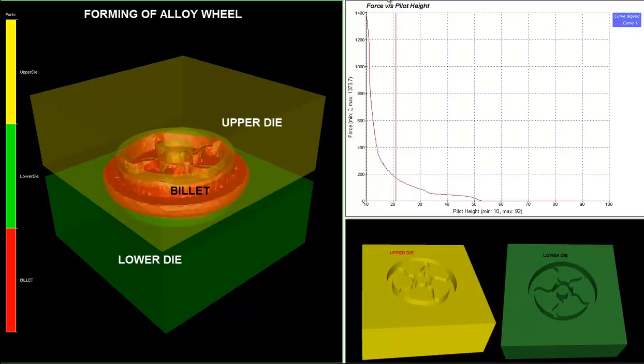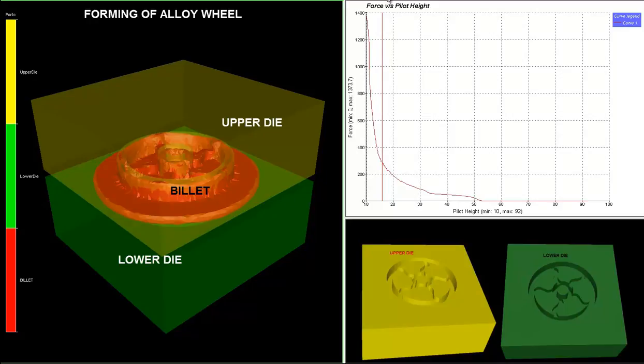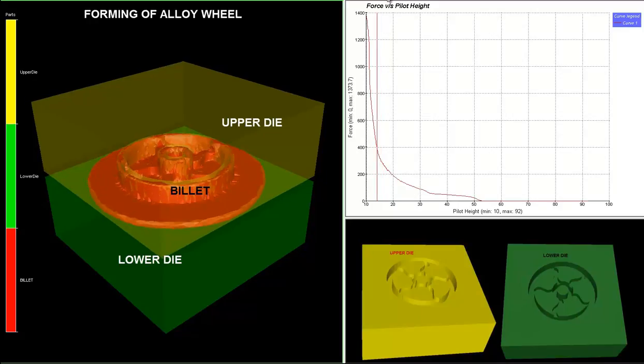On the bottom right hand corner, one can visualize the upper and lower die with cavity for metal flow, whereas the top right hand corner shows the force versus pilot height graph. Lower will be the pilot height, higher will be the forging force.